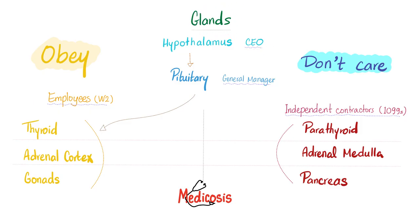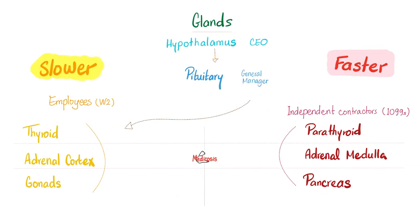The CEO is the hypothalamus, the general manager is the pituitary. We have three glands that obey the pituitary, and three glands that do not care about the pituitary. The three glands that obey the pituitary secrete lipid-soluble hormones, and therefore their receptor is inside the cell — either in the cytoplasm or the nucleus. Conversely, the three glands that do not care about the pituitary secrete protein and peptide hormones, and the receptor is located on the outside surface of the cell.